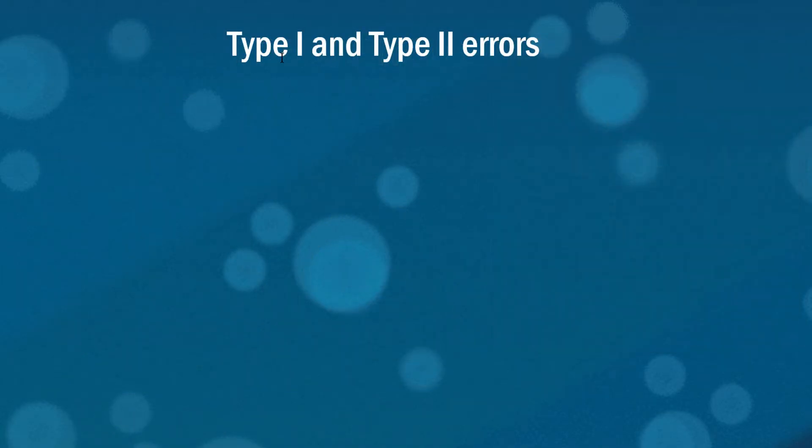Type 1 and type 2 errors are firmly entrenched within the concept of hypothesis testing, so we need to do a bit of a recap. I think the best way of doing that is using the classic court case example where there's a defendant on trial and we're going to give them the benefit of the doubt. They're innocent until proven guilty.